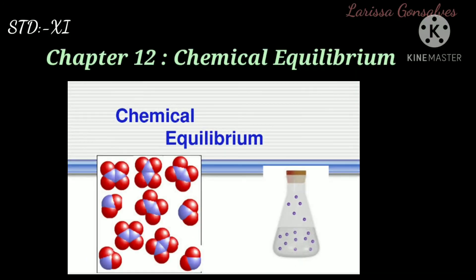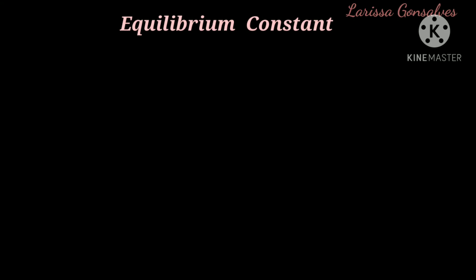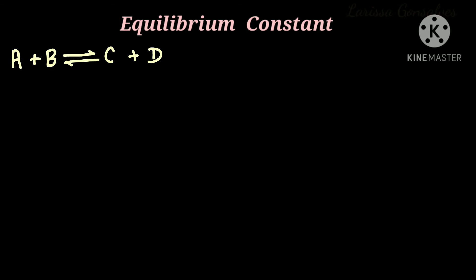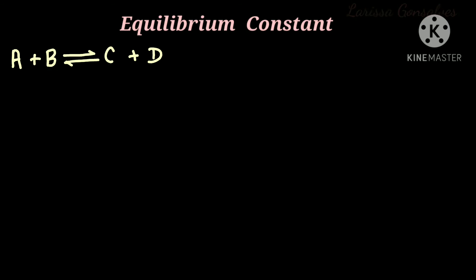In the previous video we studied the law of mass action. Now let us study about the equilibrium constant. Let us consider a reversible reaction: A plus B giving C plus D. This is a reversible reaction, hence we have put a forward and a backward arrow. In a reversible reaction, the forward and the backward reactions occur simultaneously.